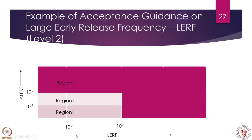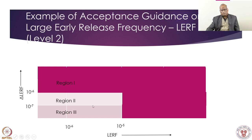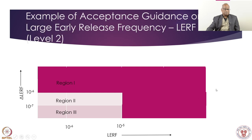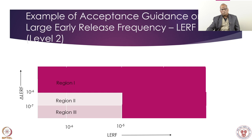For level 2, the large early release frequency (LERF) is about a factor of 10 lower than CDF — so where CDF boundaries were at 10⁻⁵ and 10⁻⁴, LERF boundaries are at 10⁻⁶ and 10⁻⁵. If something is prohibited by the CDF matrix, we go to the level 2 model. The aim is that the risk to the public should not be increased. If LERF is low enough and our containment is effective, we can find room to justify a change, but ultimately the regulators must accept the argument.